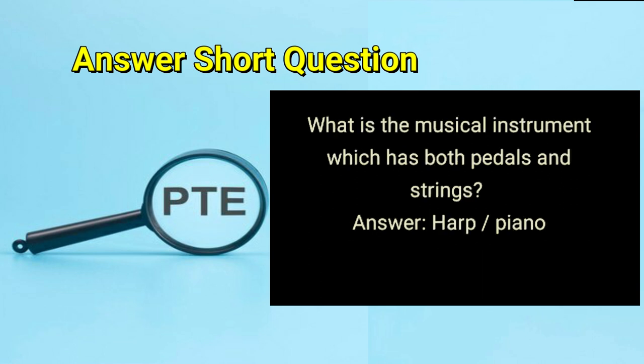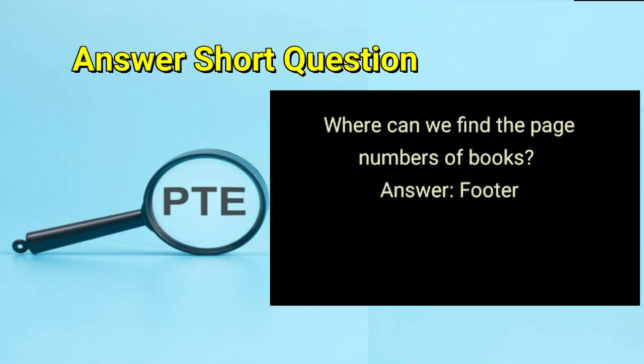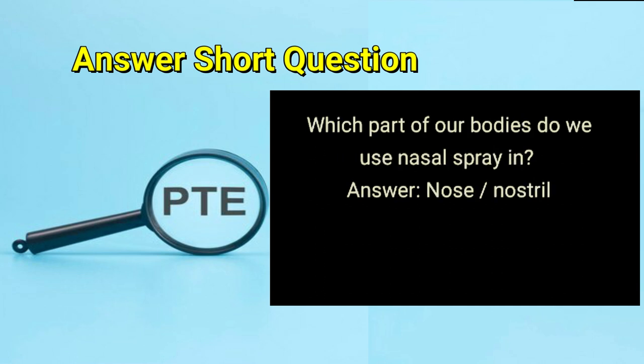What is the musical instrument which has both pedals and strings? Answer: harp or piano. Where can we find the page numbers of books? Answer: footer. Which part of our bodies do we use nasal spray in? Answer: nose or nostril.